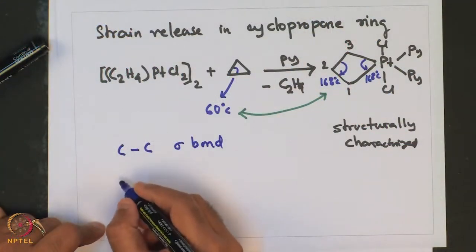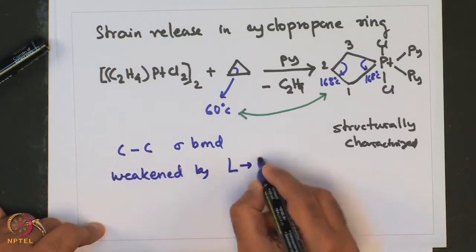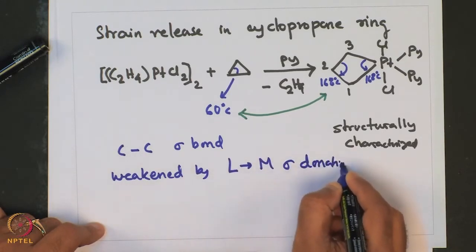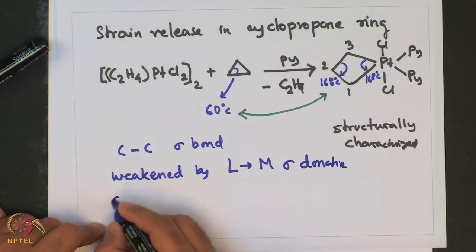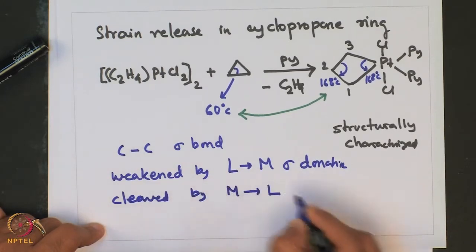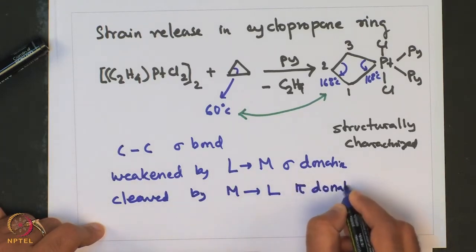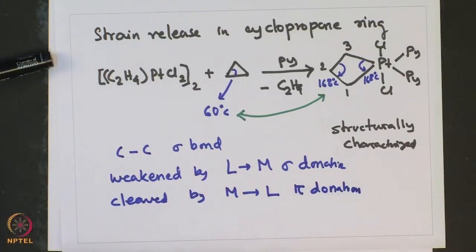The main aspects of the C-C sigma bond interaction with a metal center are that the C-C bond is weakened by ligand-to-metal sigma donation and cleaved by metal-to-ligand pi back donation. It is interesting to understand how this forward donation and backward donation occur when a C-C bond interacts with a metal center.